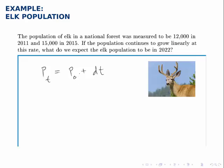In this case, we're given the population in 2011 and 2015, so we need to pick one of these to be the initial year. Let's arbitrarily define 2011 to be our year zero, the beginning of our model. The population at year zero will be the population in 2011, or 12,000.